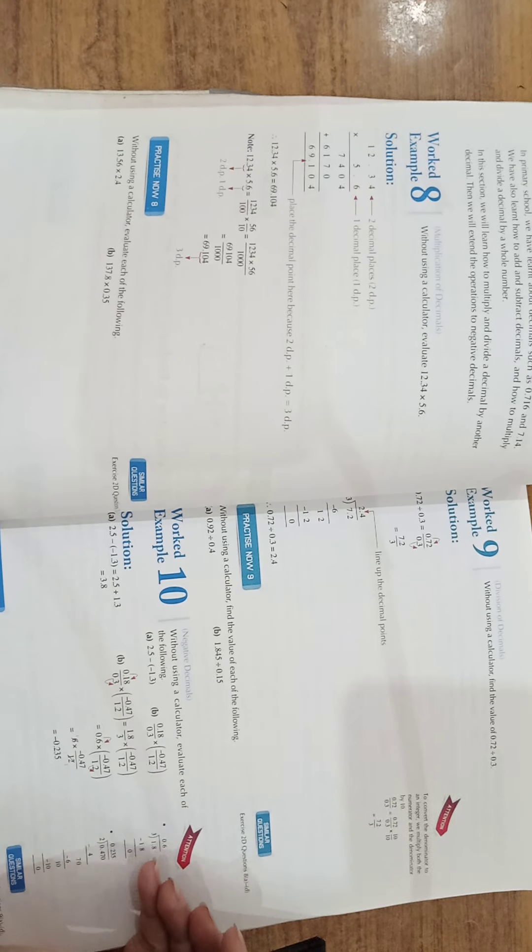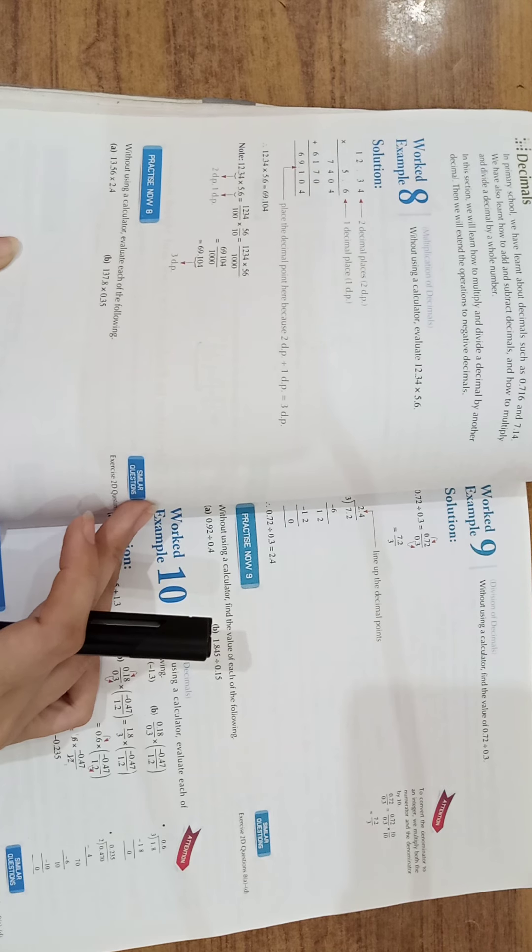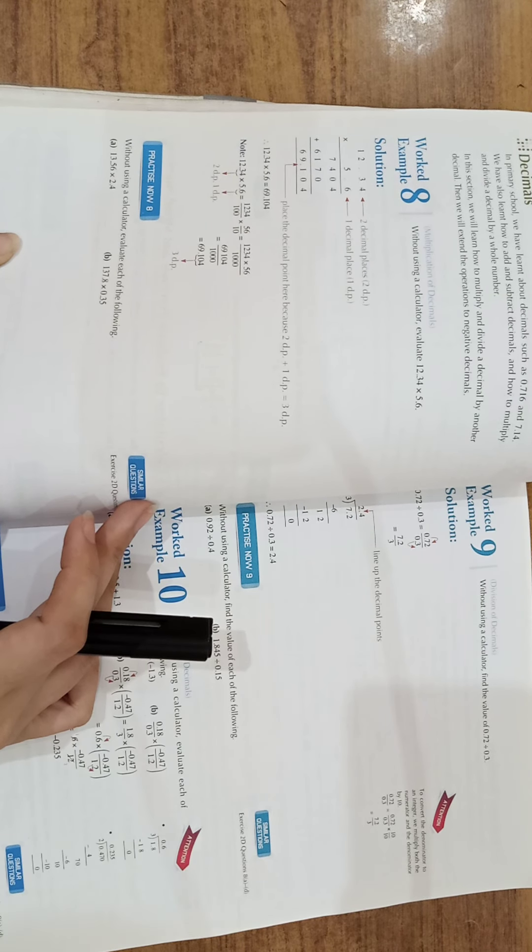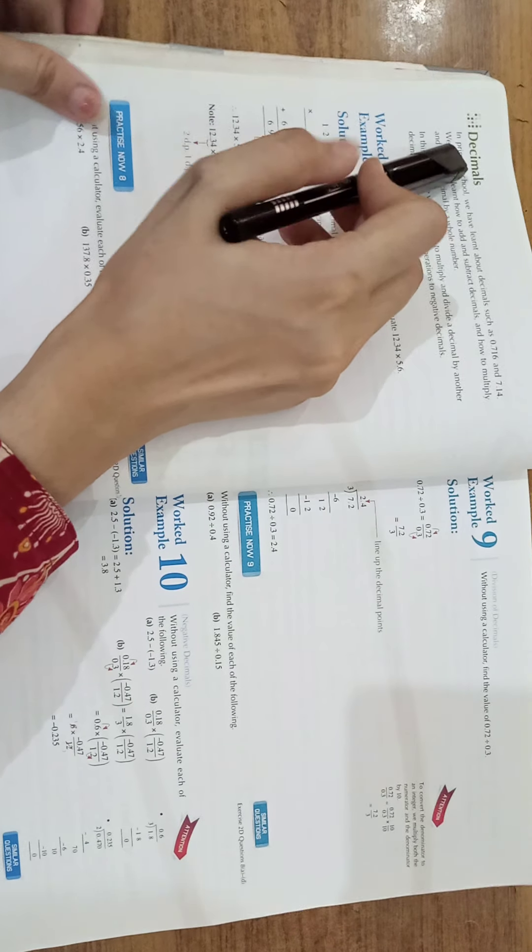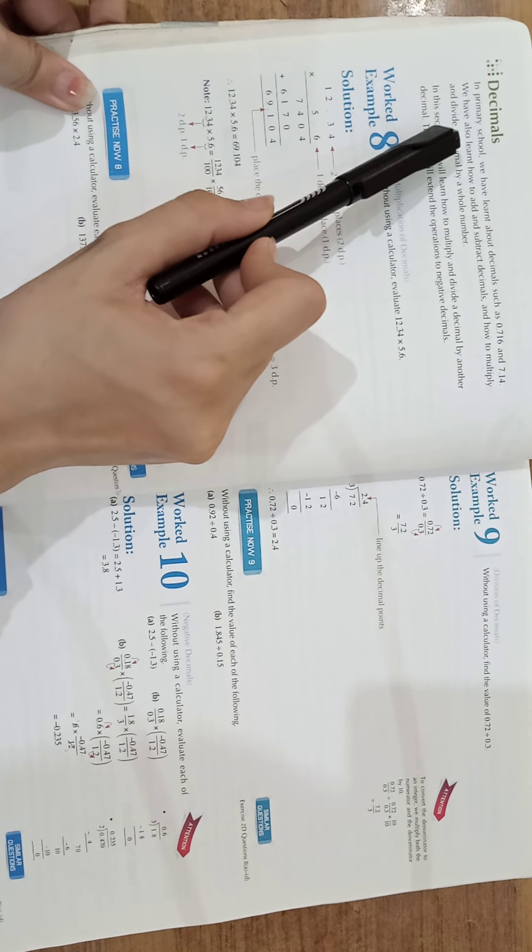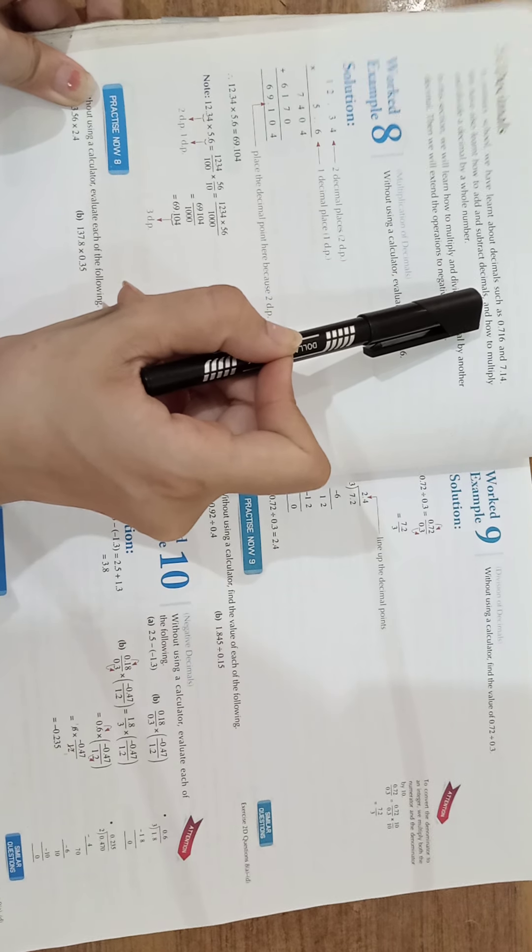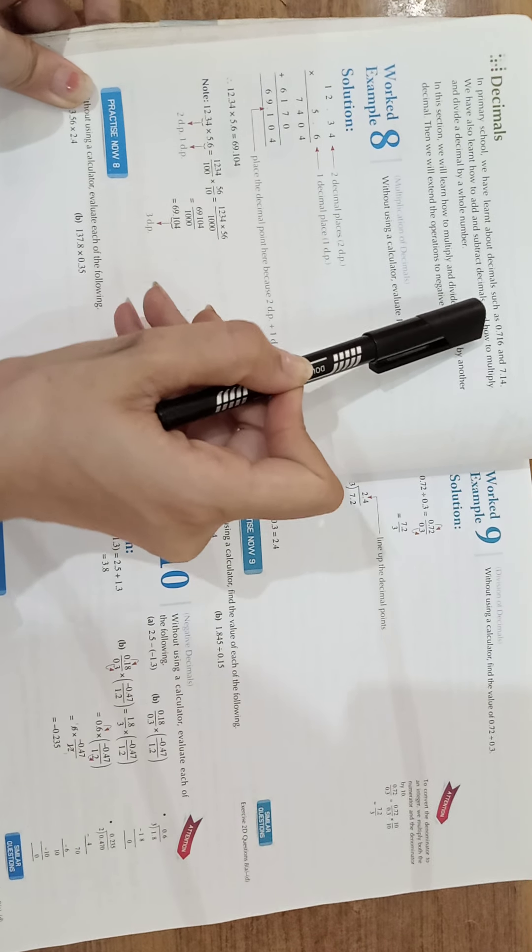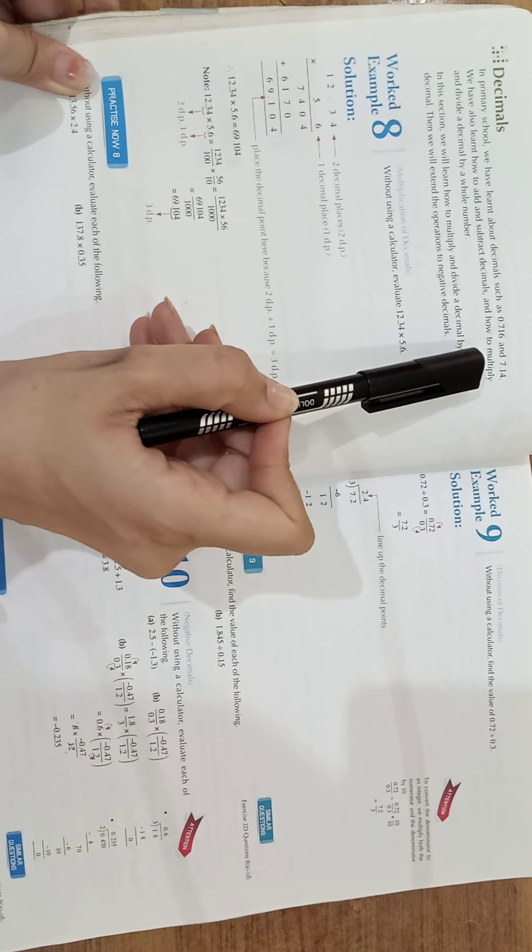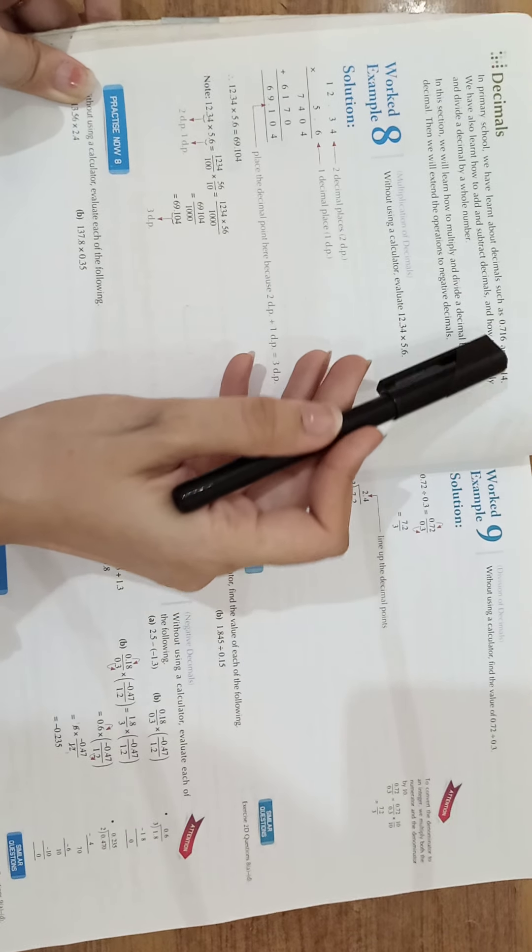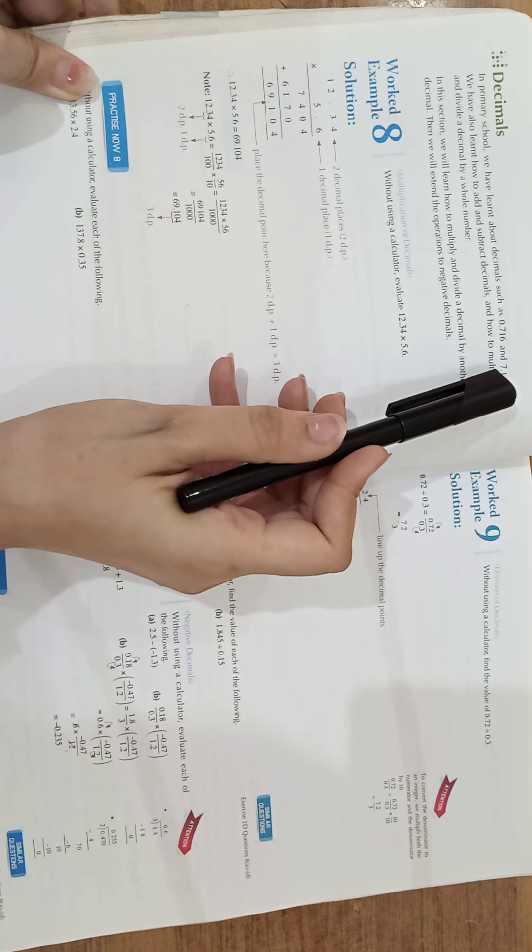Assalamu alaikum 6th class. As you know, we are solving exercise 2.4 and today we are going to discuss decimals. In previous school we have learned about decimals such as 0.716 and 7.14. Students, the values in point form are called decimals.